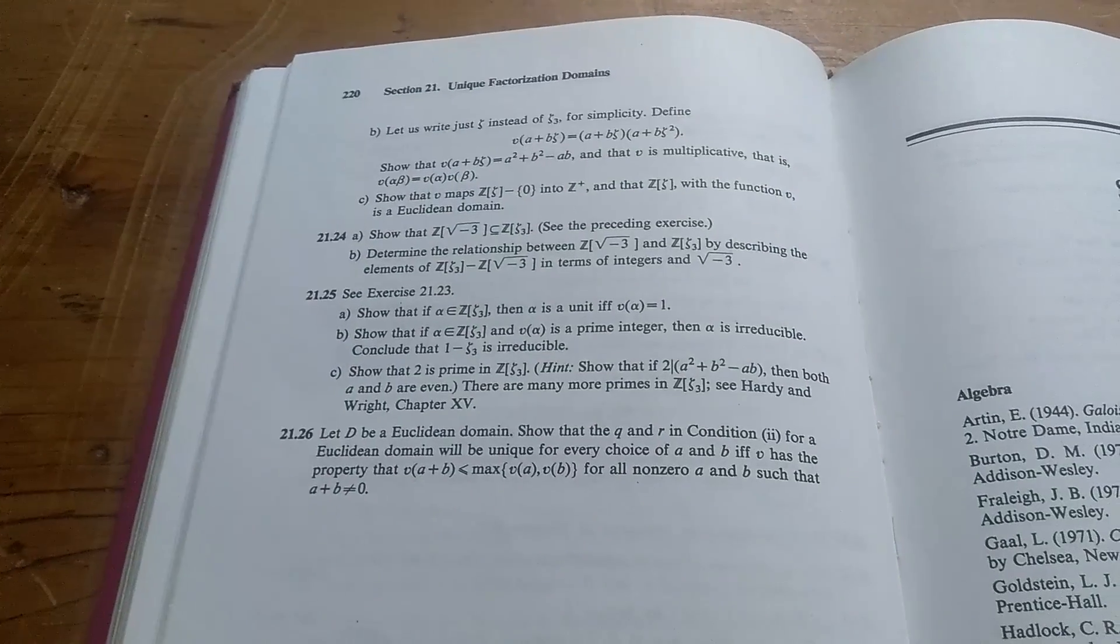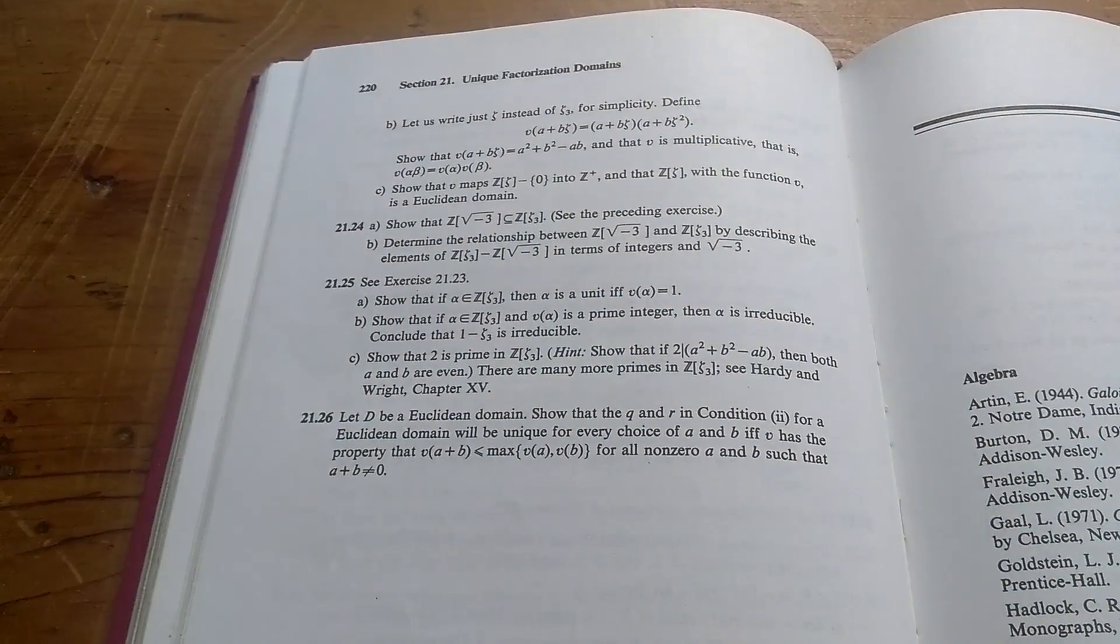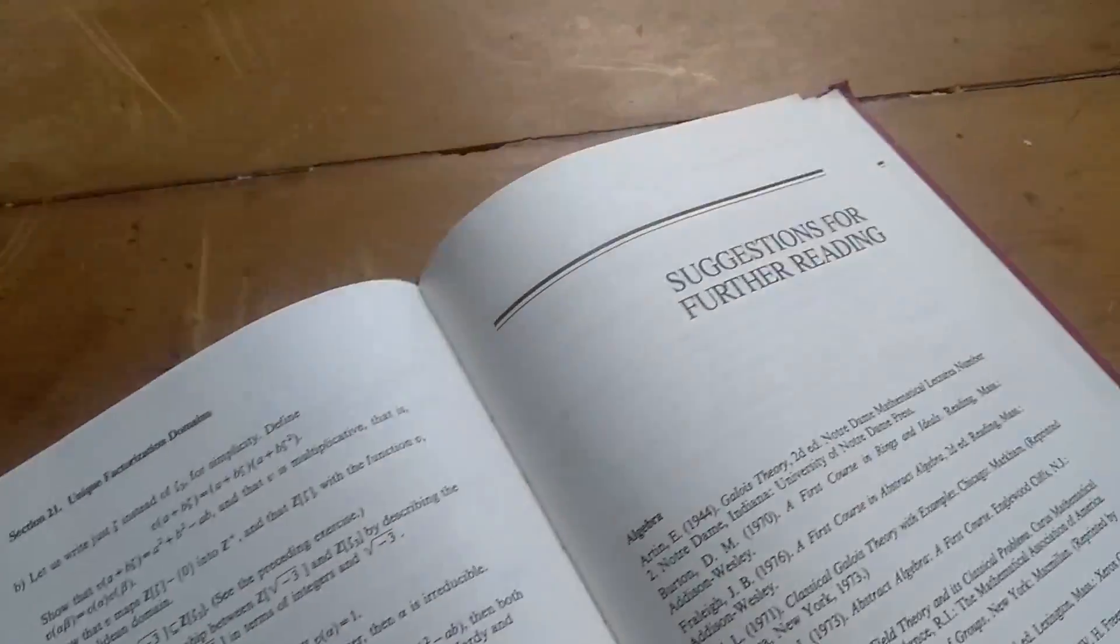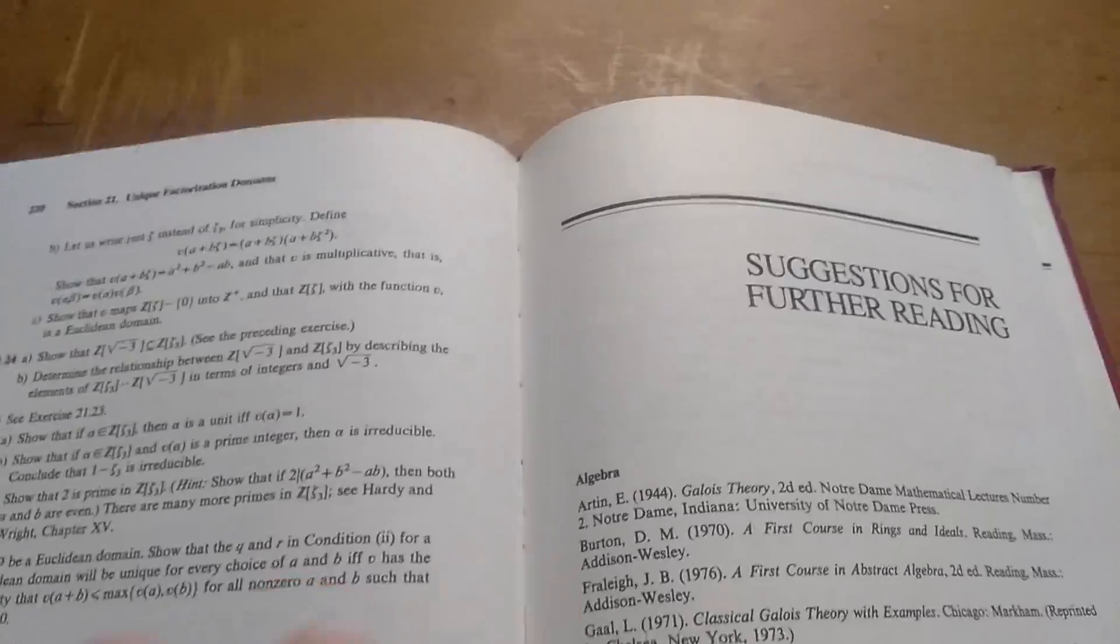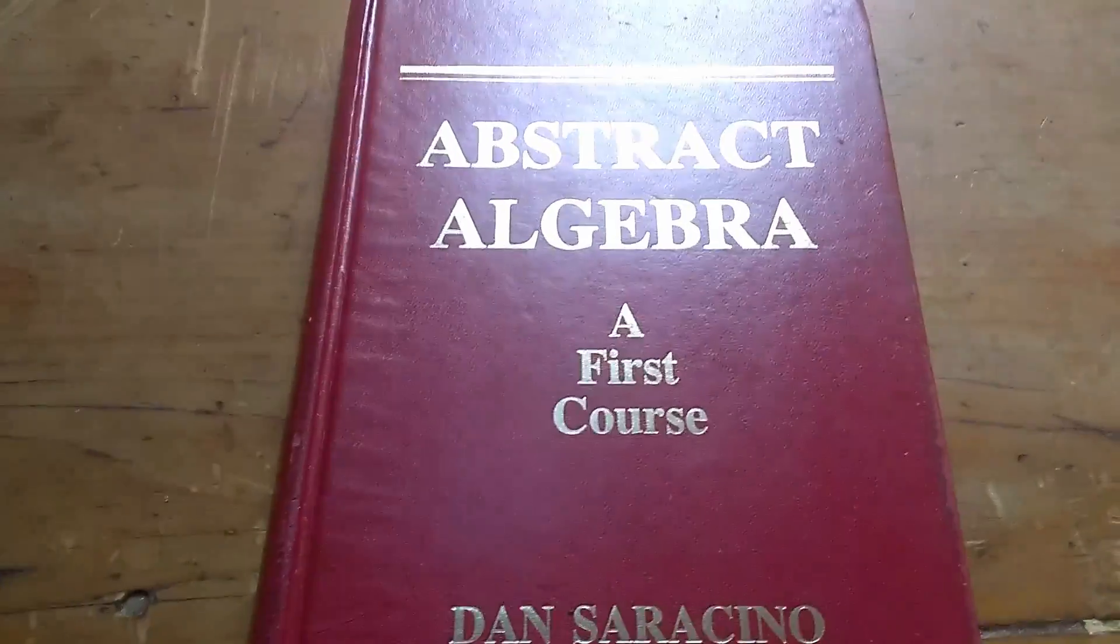So there's no field theory, no Galois theory. He doesn't talk about splitting fields and stuff like that. But otherwise, I think this is a really good book. This book is definitely worth owning if you're learning abstract algebra. And I really think this is probably the best beginner book.